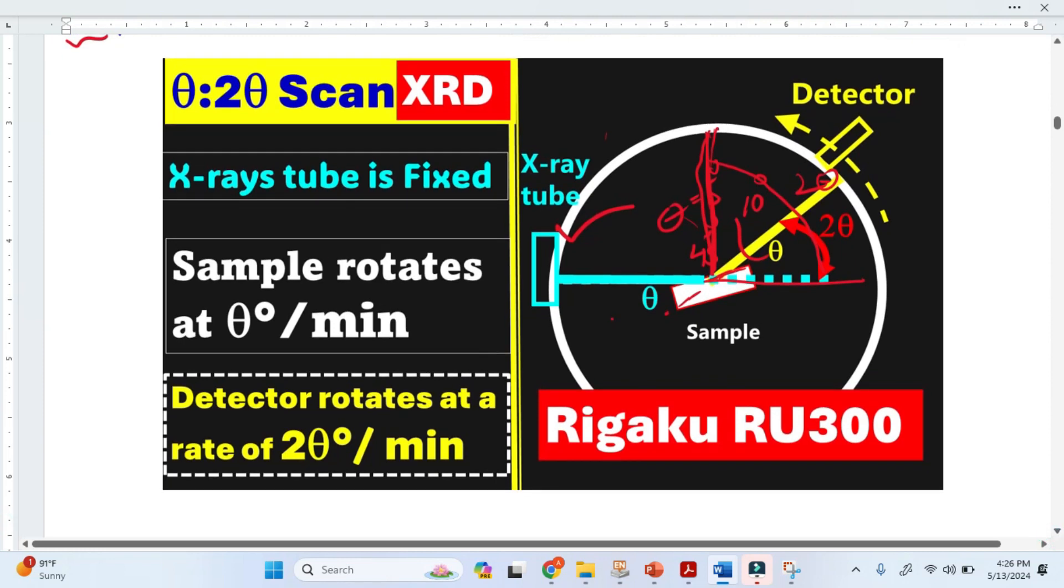In this theta to 2 theta scheme, the X-ray tube is fixed, the sample rotates at theta per minute, and the detector rotates at 2 theta per minute.